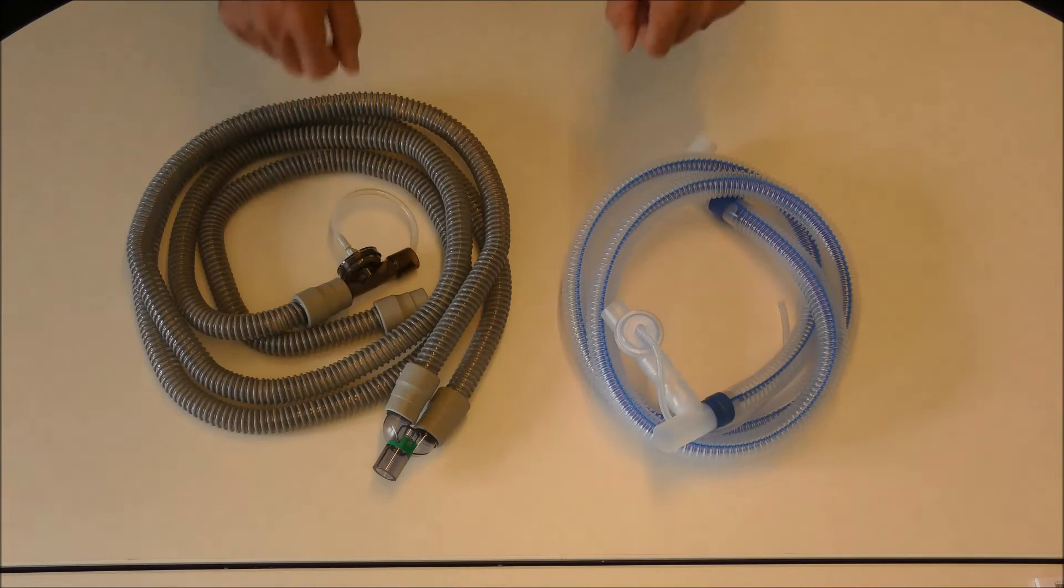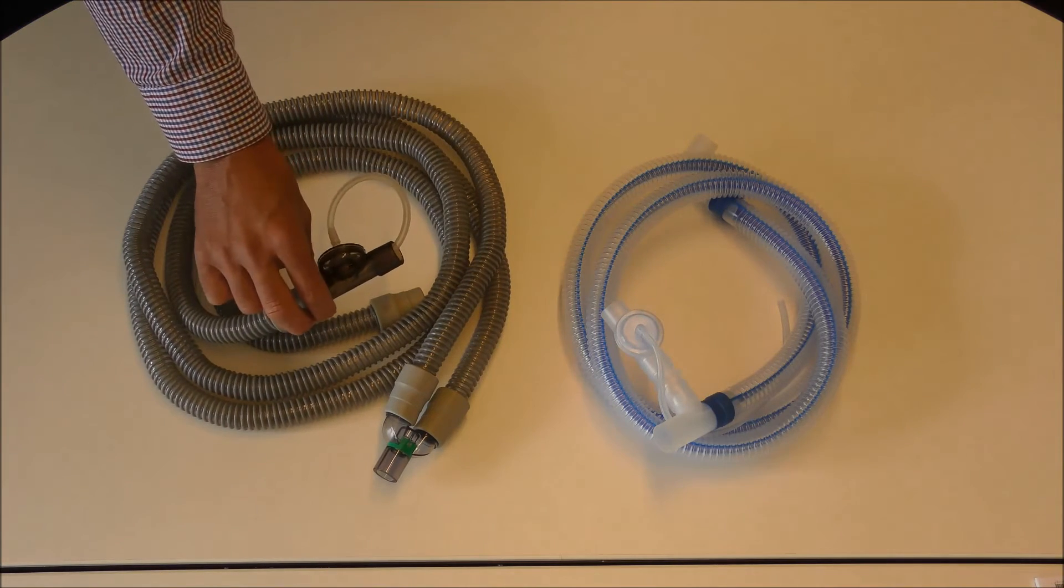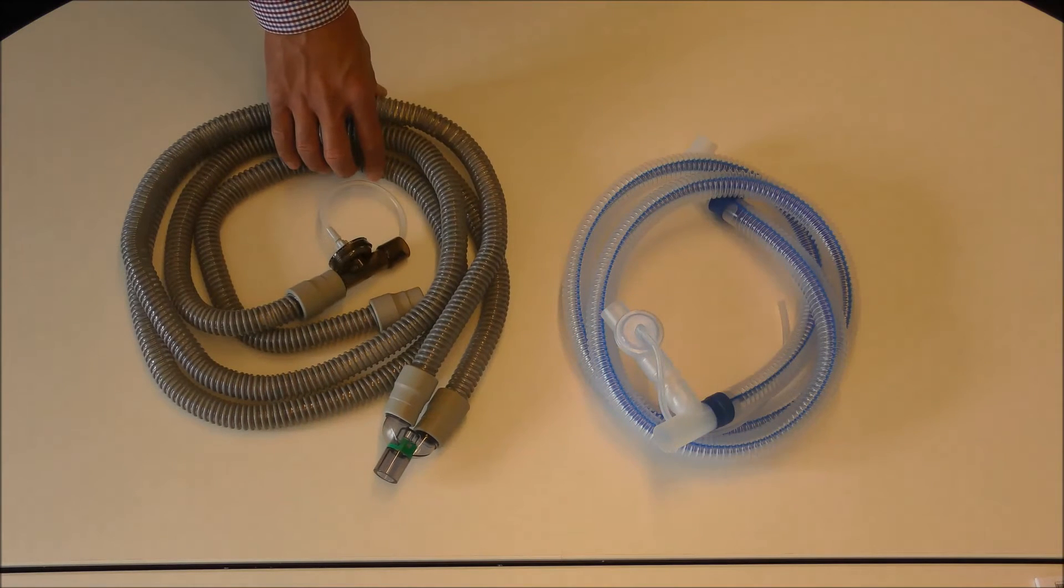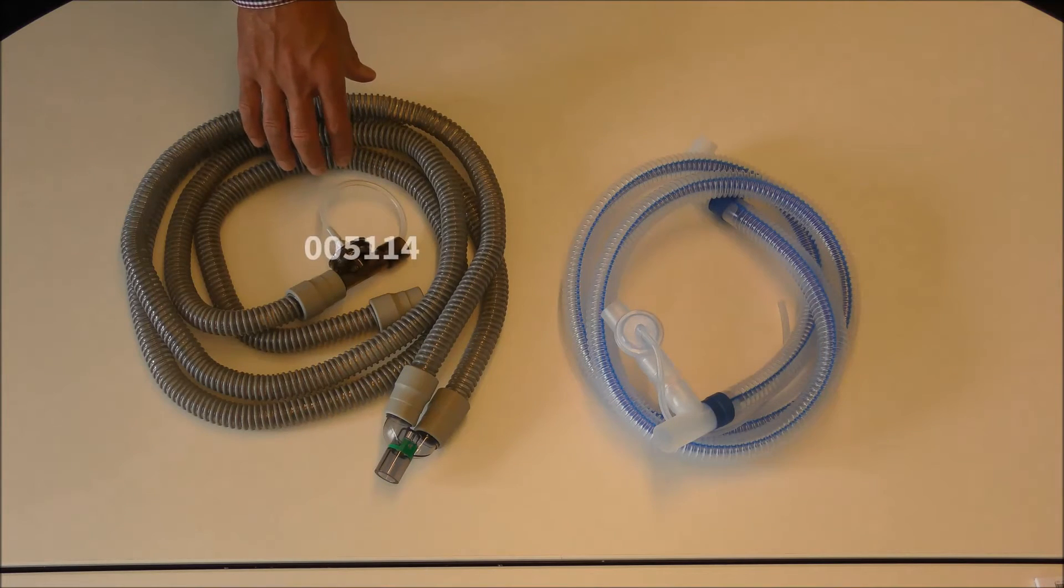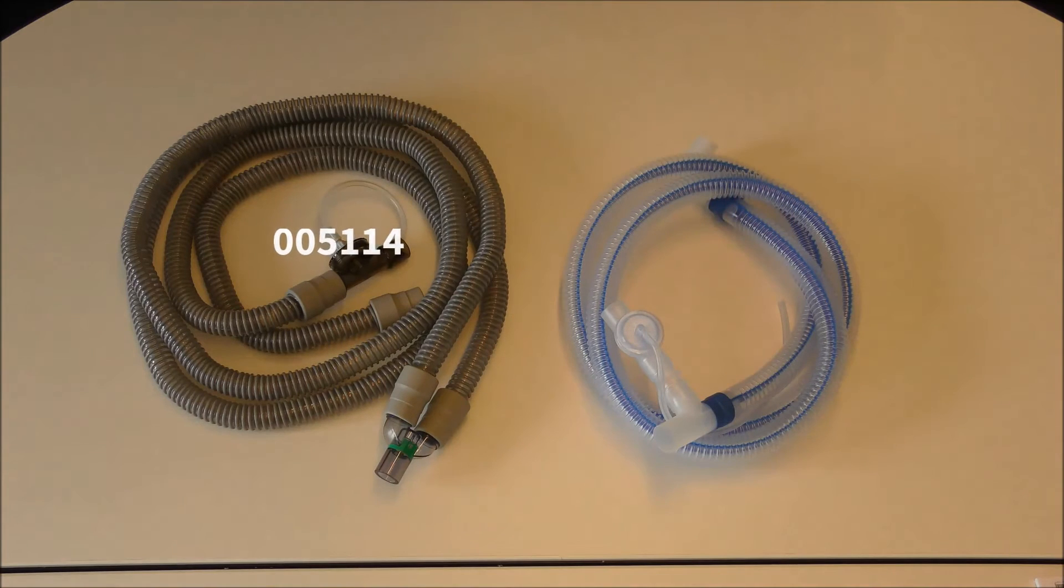Here we see the dual limb circuits to be used with the Vivo50 ventilators. The active exhalation valve can be placed near the ventilator. This is the reusable circuit with part number 005114 and this is the disposable circuit with part number 005118.